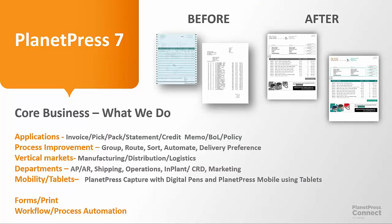Let's look at what we do with PlanetPress in a different light. If we focus on the applications, certainly the ones that stand out would be invoices and statements, pick slips and pack slips, credit memos, bills of lading, proofs of delivery, and insurance policies — all everyday applications within PlanetPress. We group them, sort them, route them, and manage preferences so the right folks get the right form in the right format. The vertical markets are wide and varied but we have a concentration in manufacturing, distribution, and logistics. We work in all different kinds of departments within your customer base, whether that's AP or AR, all the way to marketing. We even have applications that allow our documents to be used on a tablet for capture of information and routing back into an automated workflow that PlanetPress can manage.